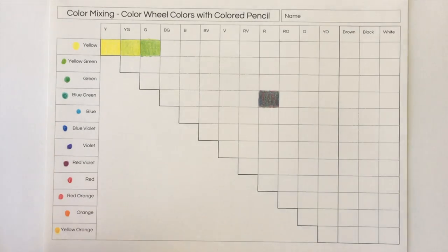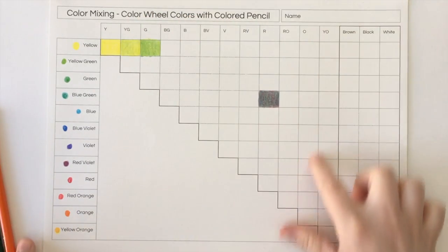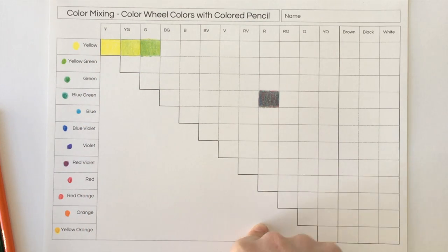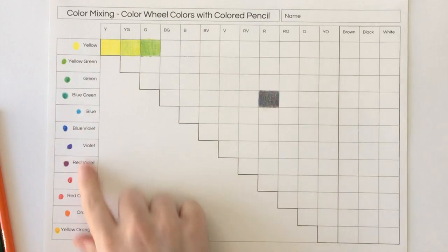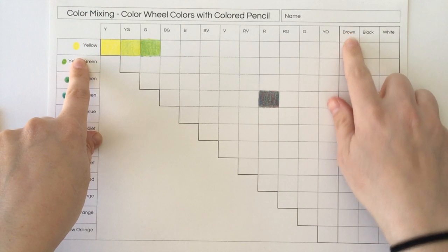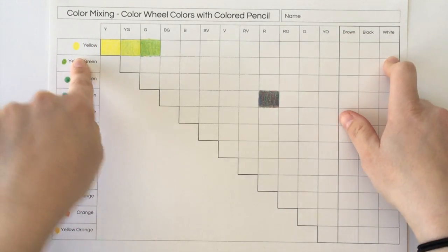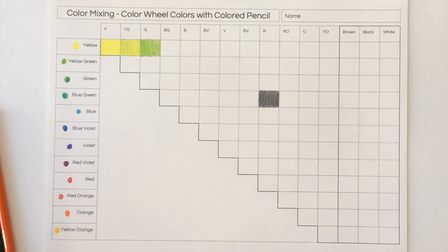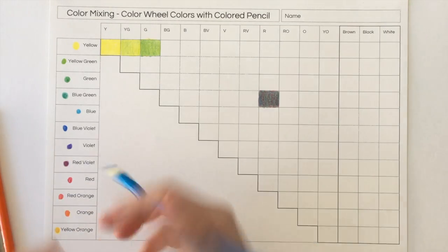Okay, so that's how you do the different colors put together. And then once you're done with that, for each color you're going to add brown, black, and white.